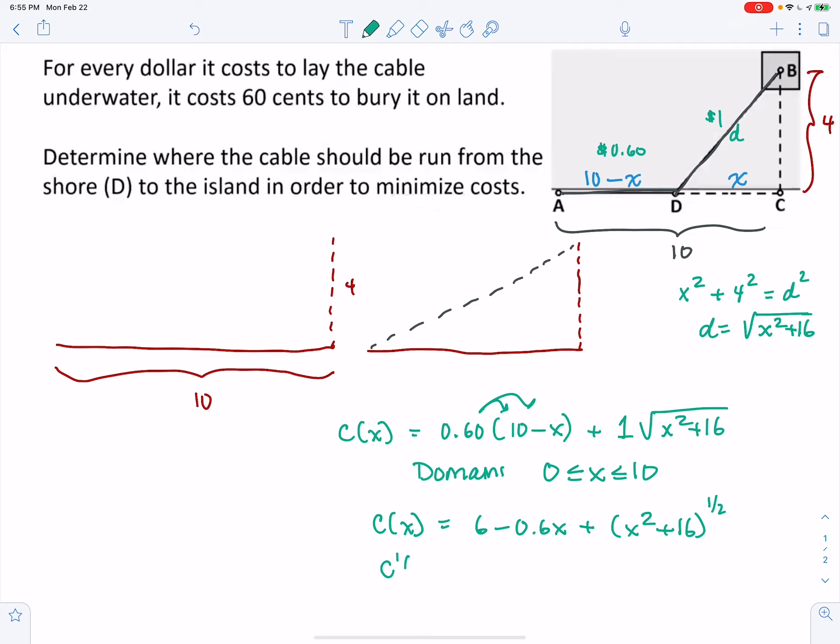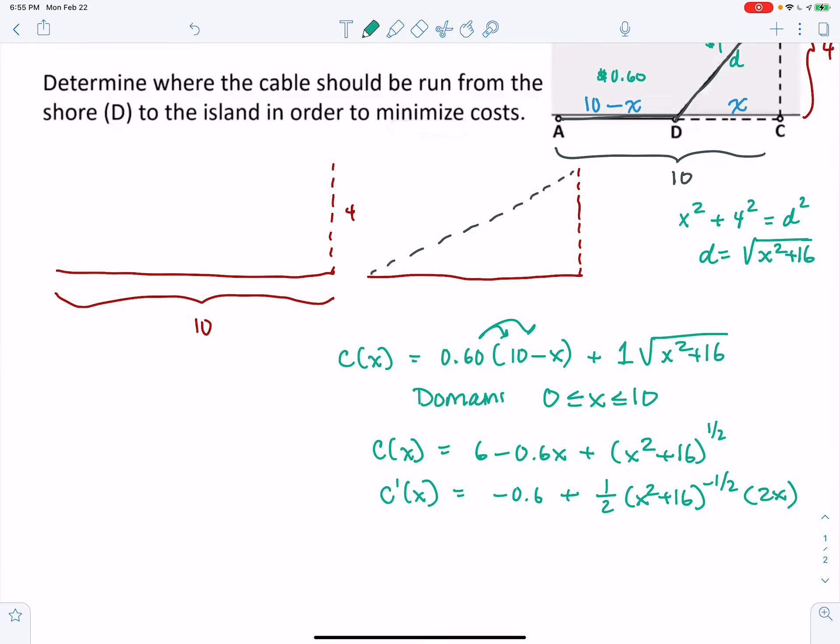And then we're going to take our derivative, so derivative of 6 is 0, derivative of negative 0.6X is negative 0.6. This is plus 1 half thing to the negative 1 half times the derivative of the thing. So I'm going to clean this up before I set it equal to 0. So we have negative 0.6, 1 half and 2 cross each other out, and we have an X multiplied and a negative 1 half power there. So I'm going to write that as X over the square root of X squared plus 16. And I want to find all the points where that's equal to 0.